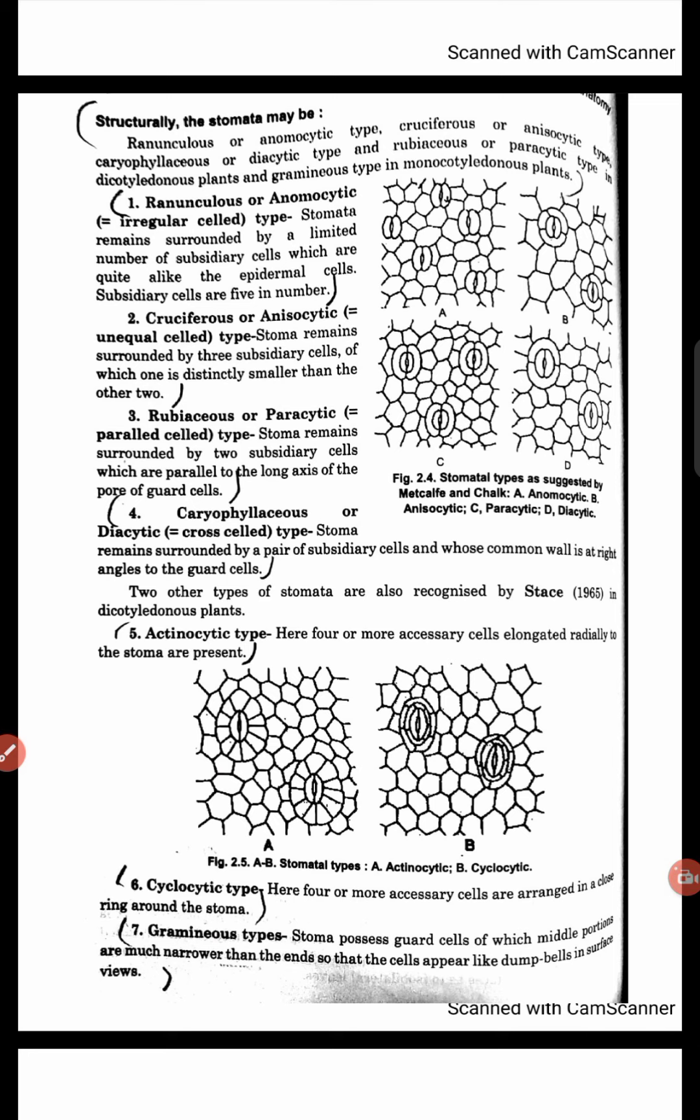Fifth point: Actinocytic. Here we see four or more subsidiary cells which are elongated radially around the stomata.